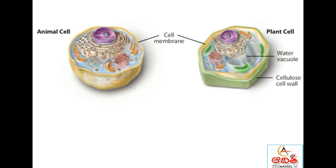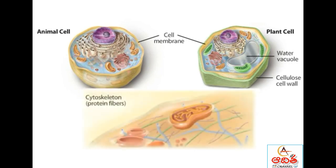Both plants and animals have a cytoskeleton, which is a network of protein fibers that carry out a variety of functions, including cell support and the movement of structures within cells. The cytoskeleton also provides animal cells with the ability to move and maintain their shape, much the same way a human skeleton does.